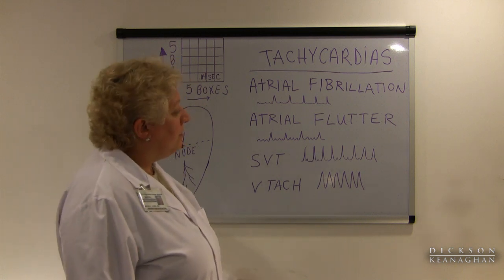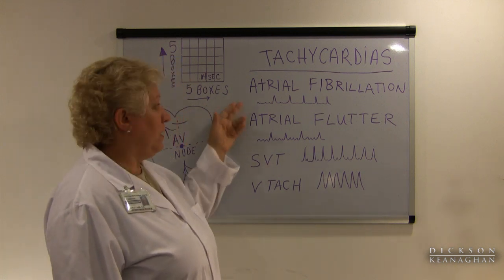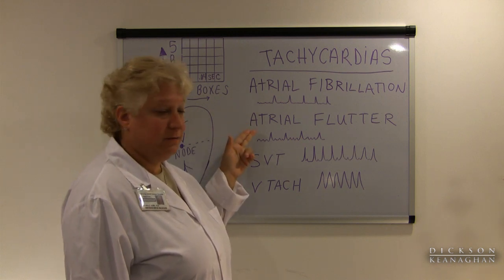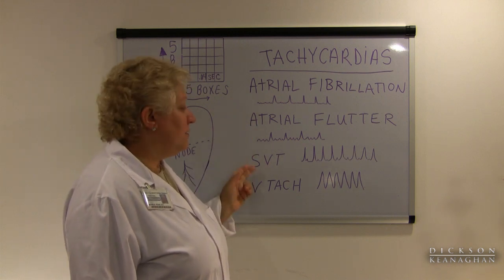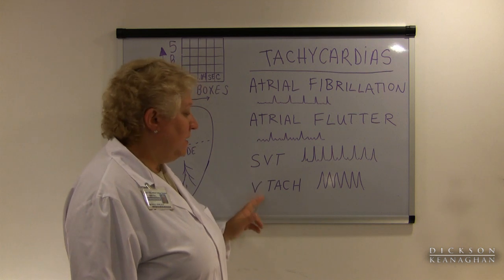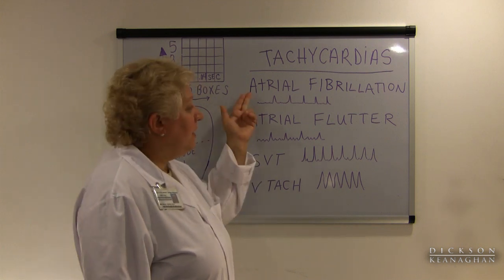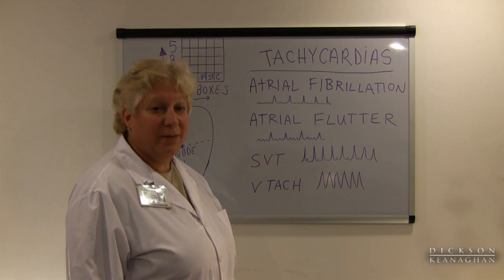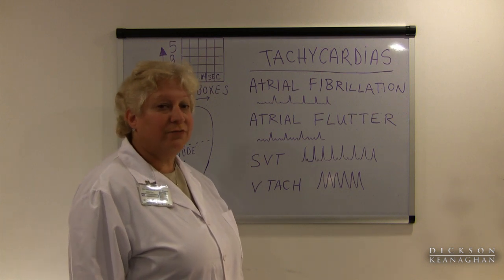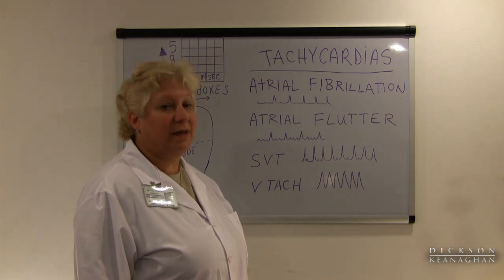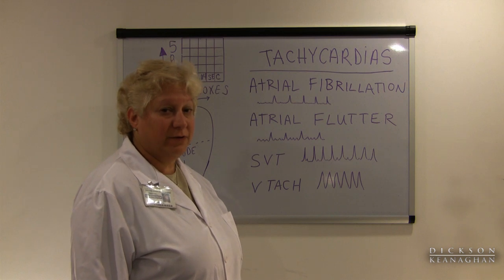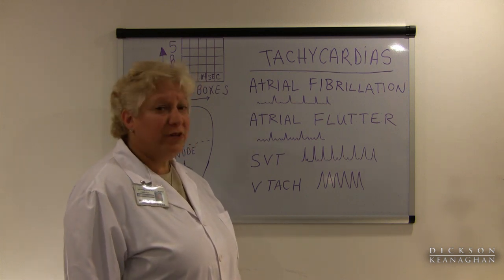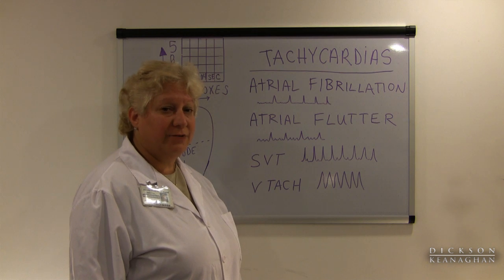There are a few tachycardias we need to talk about: atrial fibrillation, atrial flutter, SVT, and VTAC. Now atrial flutter and atrial fibrillation may not always present as a tachycardia, but it's good to recognize them and understand that they can become very fast rhythms. These are arrhythmias that originate in the atrium.